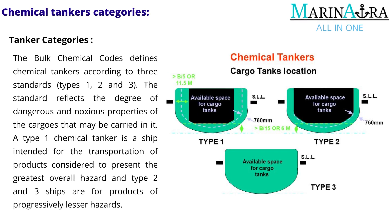The standard reflects the degree of dangerous and noxious properties of the cargos that may be carried in it. A type 1 chemical tanker is a ship intended for the transportation of products considered to present the greatest overall hazard, and type 2 and 3 ships are for products of progressively lesser hazards.